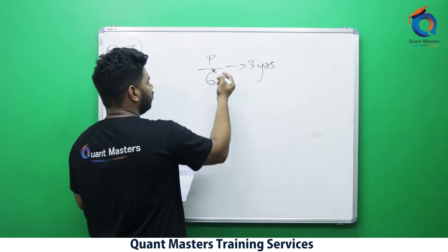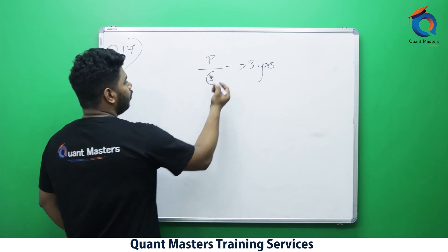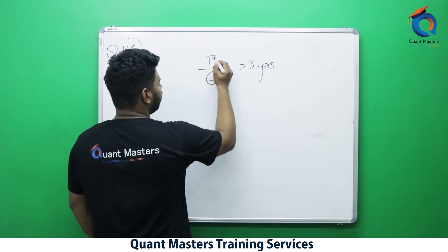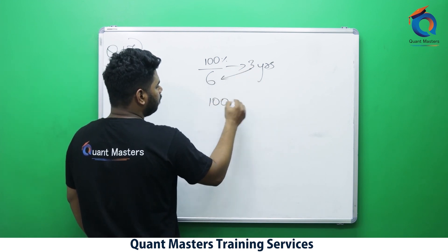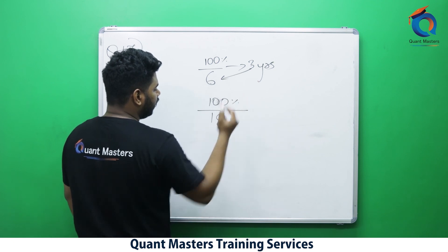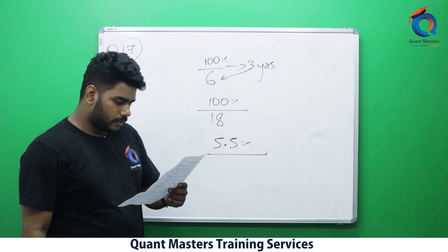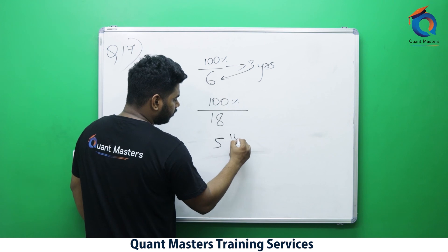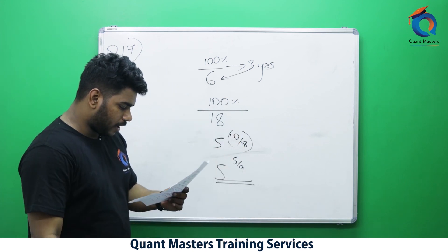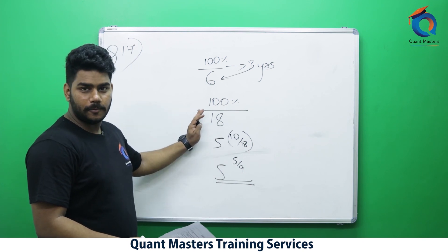Initial principal = P = 100%. Interest in three years = P/6. In one year, interest = P/6 ÷ 3 = P/18 = 100%/18. So rate = 100/18 per annum. 100 ÷ 18: 5 remainder 10, giving 5 and 10/18 = 5/9. Rate = 5 and 5/9 % per annum. Check the options — this is Option A. This is the simplest way to solve the problem. Please write it down.